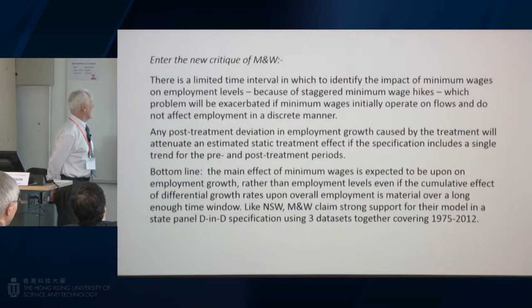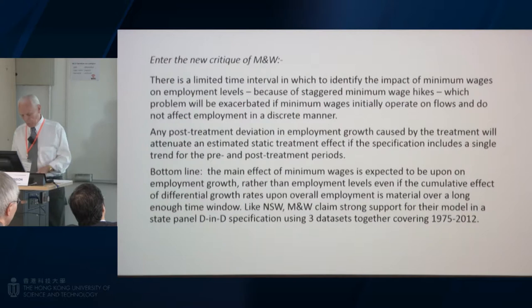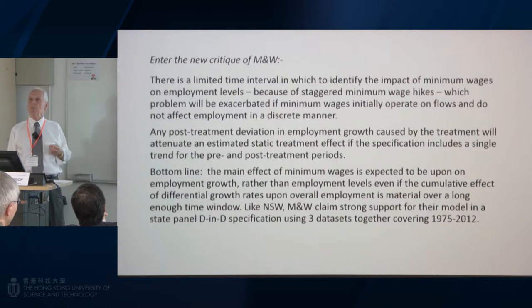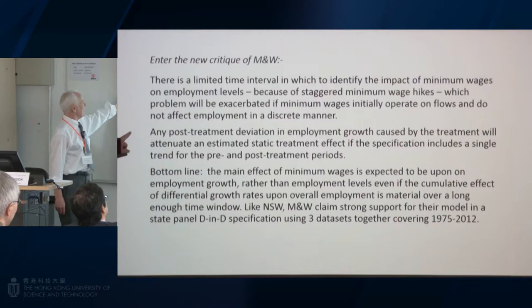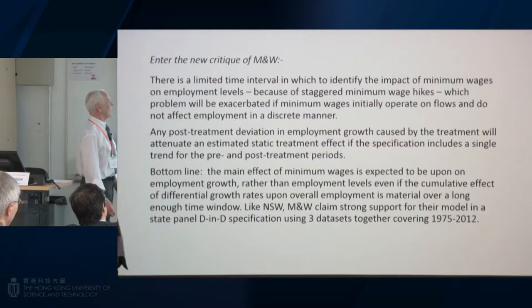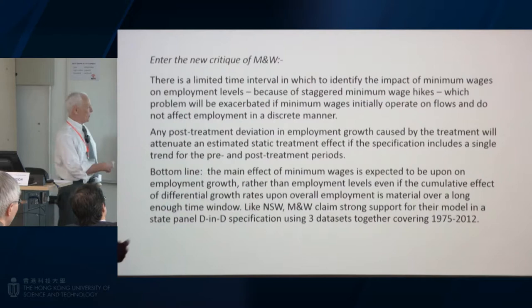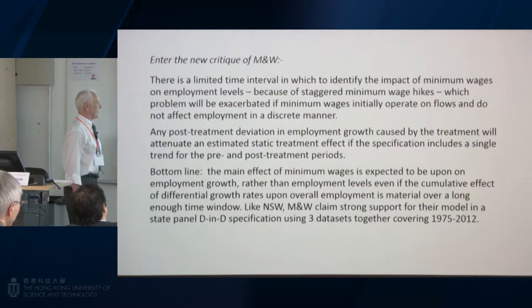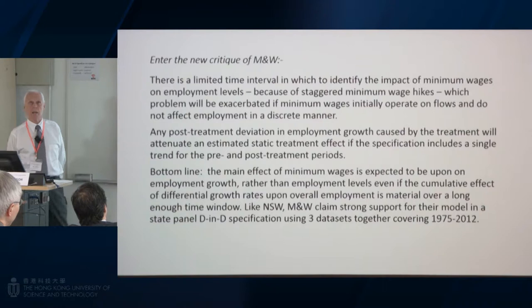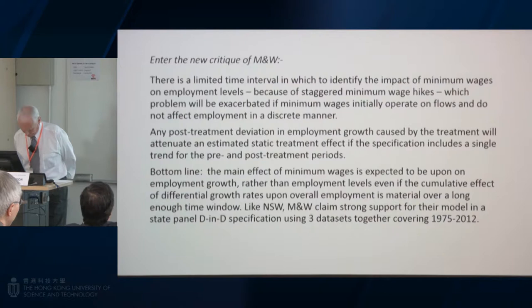The criticism of Meir and West is rather different. Basically they say that what's really going on is a question of employment dynamics, and in the process the effect of minimum wages on employment levels is attenuated. Any post-treatment deviation in employment growth caused by the treatment will attenuate an estimated static treatment effect if the specification includes a single trend for the pre- and post-treatment periods. That is basically their criticism and their reason for excluding the use of this linear trend.